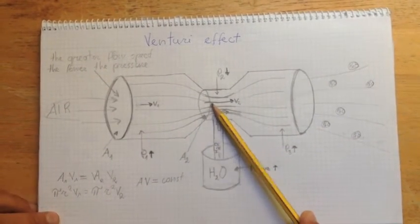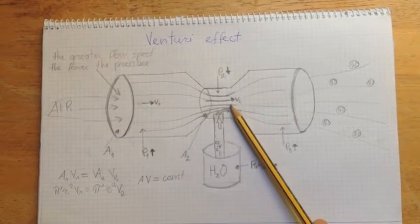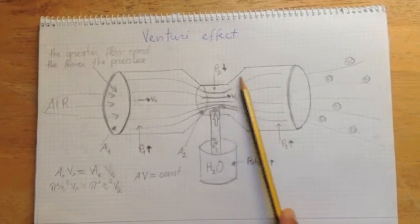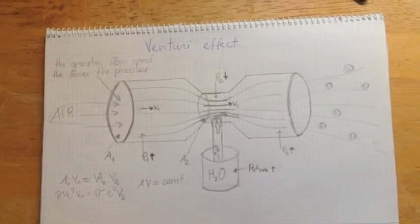And as you know, the greater the flow speed is, the lower the pressure. That's why this is a low pressure zone here. So this is how an experiment looks like in reality.